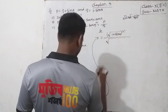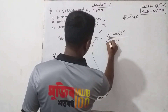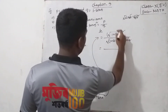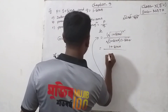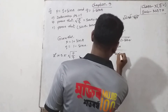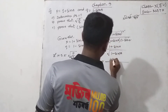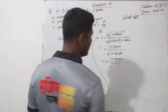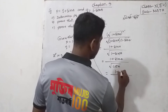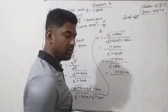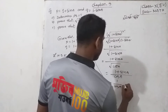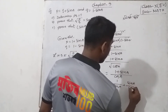The denominator becomes root over 1 plus sin A into 1 minus sin A, which equals root over 1 minus sin squared A. We know 1 minus sin squared A equals cos squared A. Taking the square root out gives cos A. So we can write 1 plus sin A divided by cos A, which is 1 by cos A plus sin A by cos A.